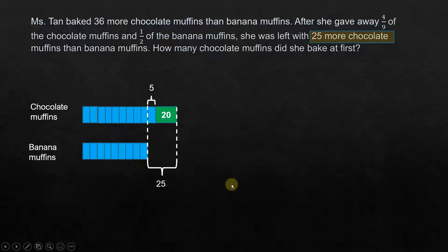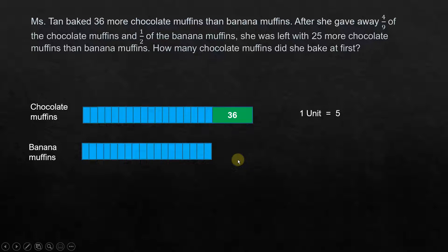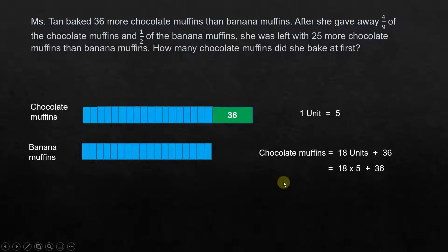So one unit equals 5. Going back to the original quantities: chocolate muffins had 18 units plus 36, and banana muffins had 18 units. How many chocolate muffins did she bake at first? She baked 18 units plus 36. Since one unit equals 5, that is 18 times 5 plus 36, which comes to 126.